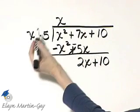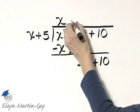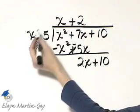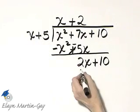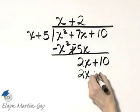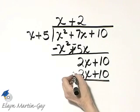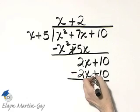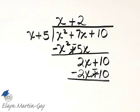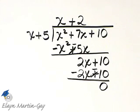I'll start the process again. What times x gives a product of 2x? Well, that would be 2. Now let's multiply. 2 times x is 2x, and don't forget to multiply 2 times 5, that's 10. Draw our line because we are next subtracting, so I'm going to change all of these signs. 2x minus 2x is 0. 10 minus 10 is 0. My remainder is 0.